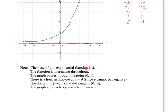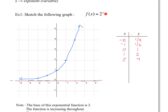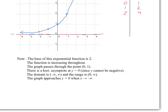A couple of things to note: the base is 2. The function is increasing throughout — moving left to right, it continues to grow constantly. The graph passes through the point (0, 1), which is important for all exponential graphs. There is a horizontal asymptote at y equals 0, since 2 to the power of anything will never give a negative value. The domain is negative infinity to infinity, but the range is 0 to infinity, not including 0 — that's where the asymptote is.